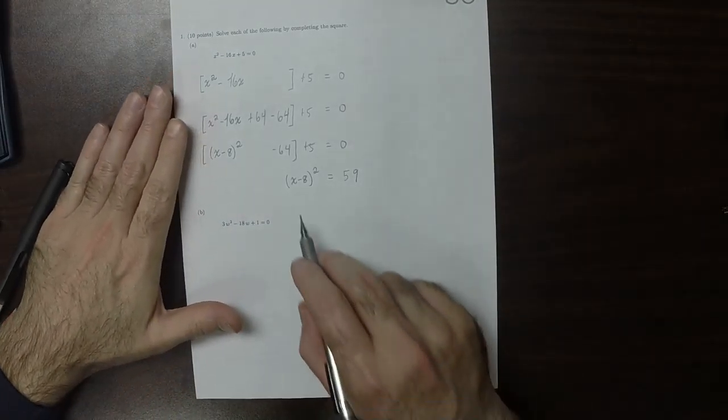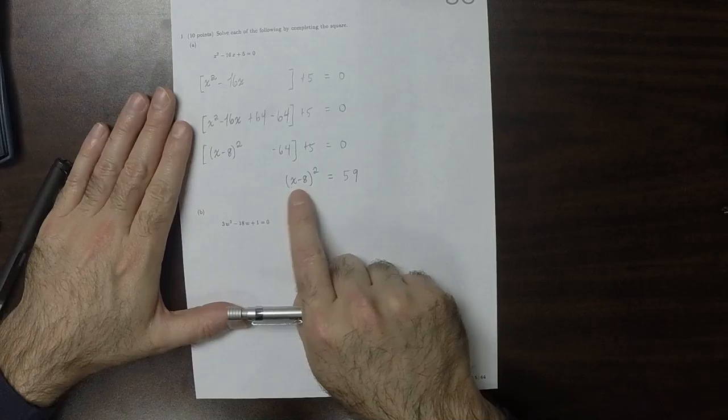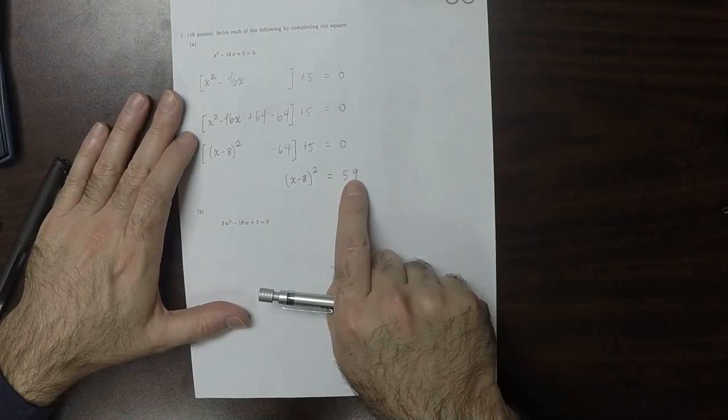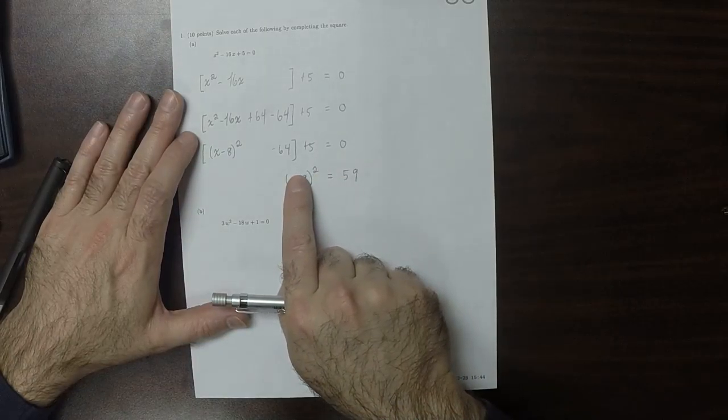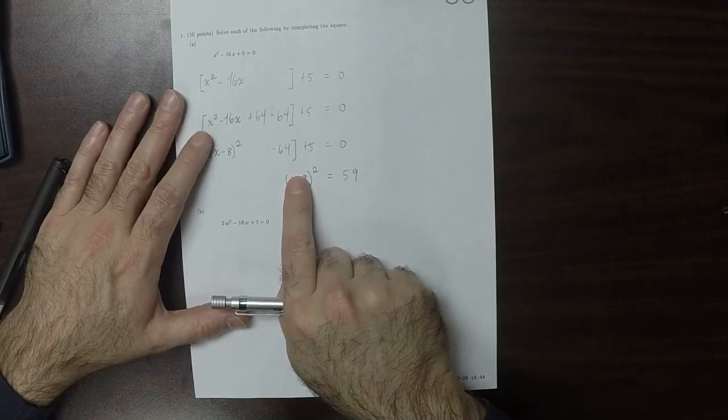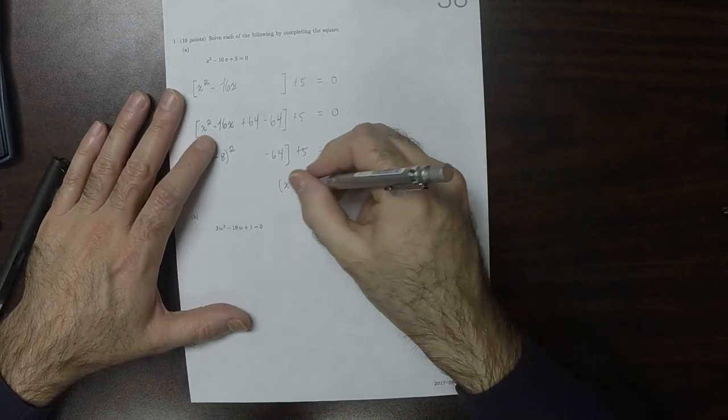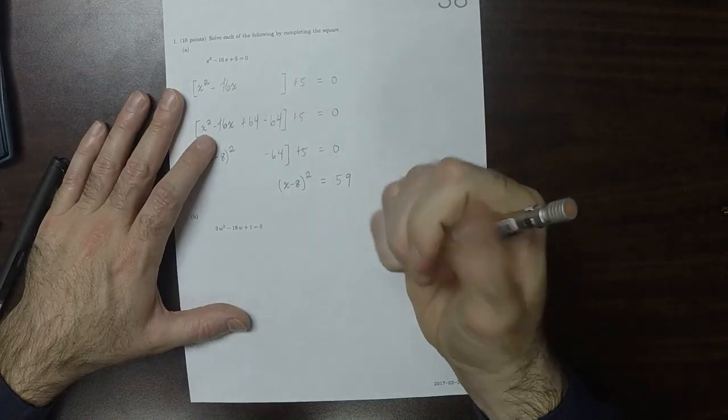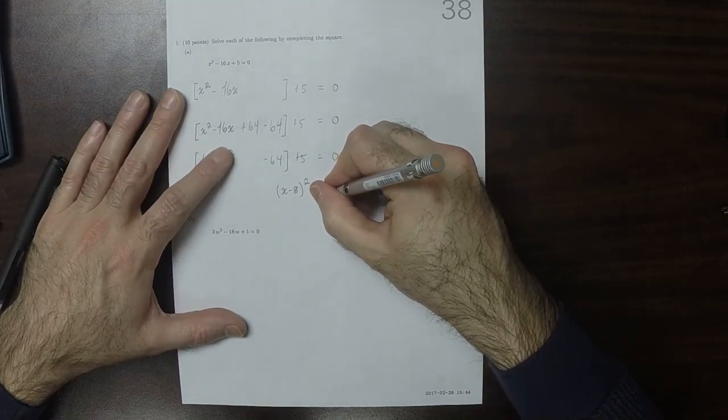So now there's two possibilities. We want something to square to become 59. So what's in here must be the square root of 59, or negative square root of 59, which is to say that it splits into two.